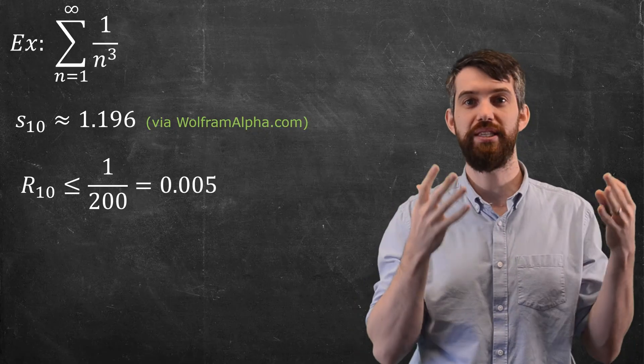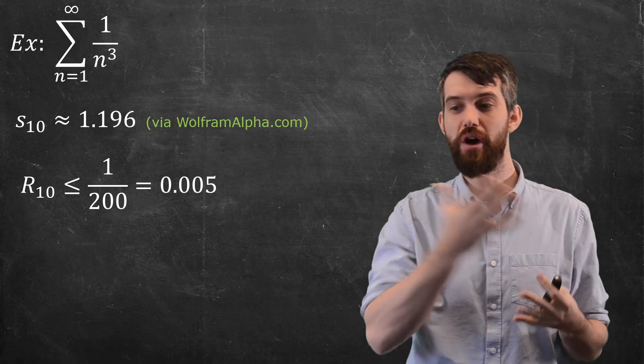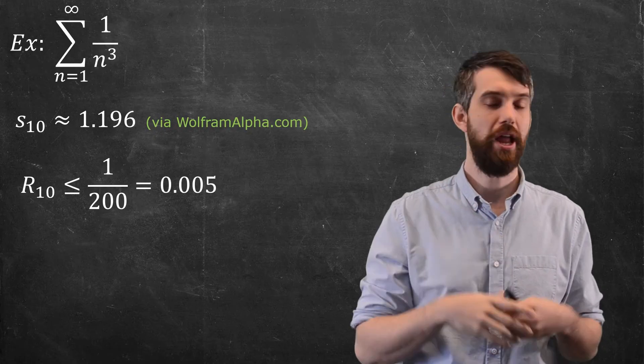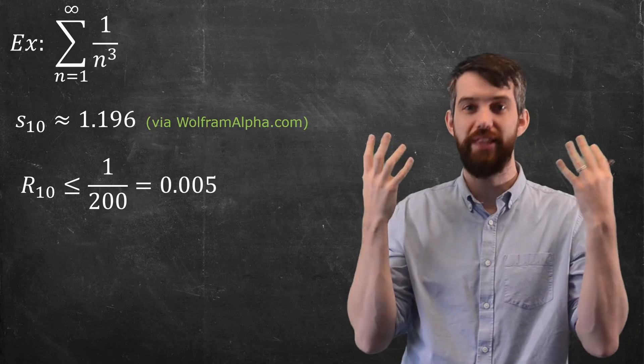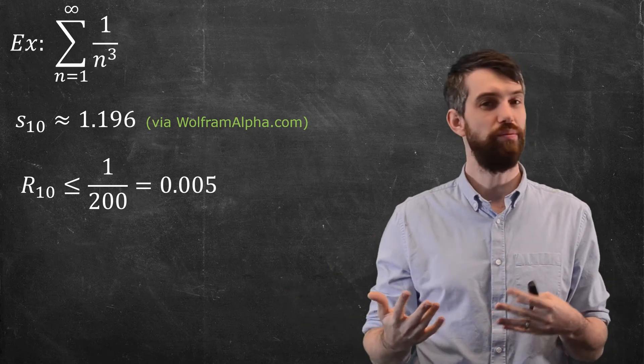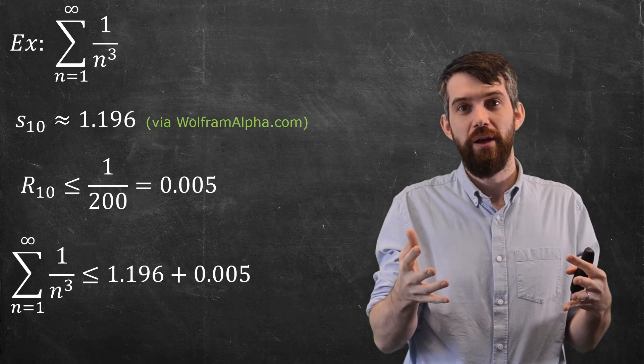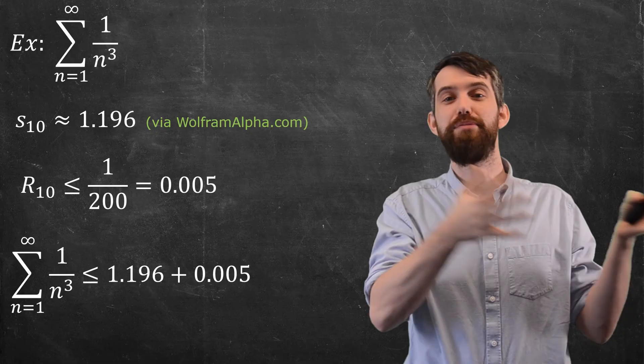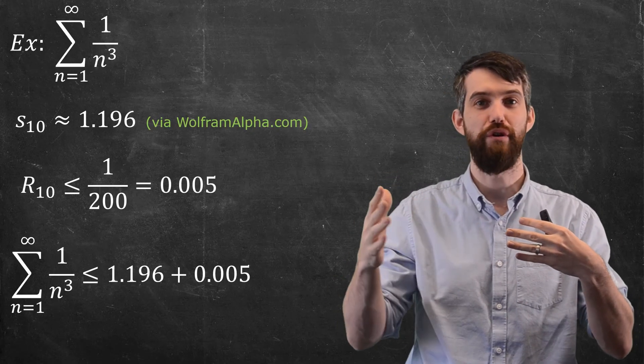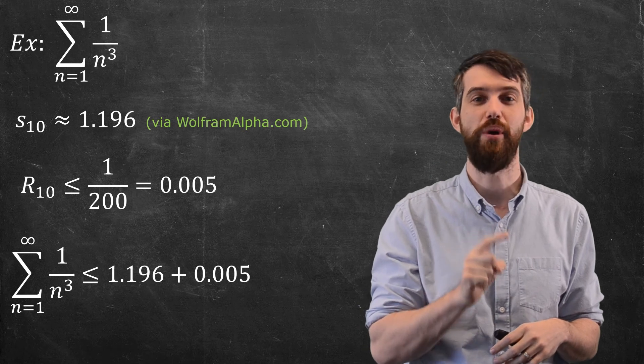So what do I know? I'm beginning with this series adding up 1 over n cubed. I've done S10, so my approximation by adding 10 terms is 1.196. And my remainder is less than 0.005. My series is positive and decreasing, so as I add more terms from the remainder, it would only get bigger. So the actual series is the approximation, 1.196, plus it might be up to 0.005 more than that. I don't know exactly where it lies in that 0.005 range, but the series is less than 1.196 plus 0.005.